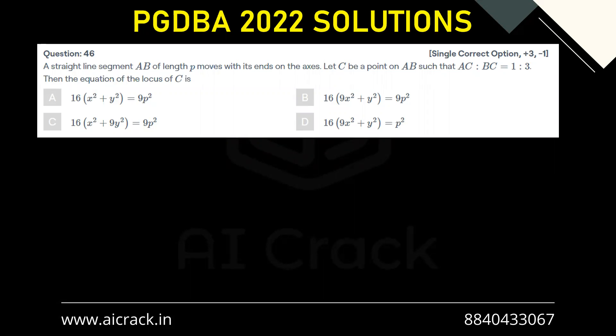Hi everyone, let's solve question number 46. A straight line segment AB of length p moves with its ends on the axis. Let C be a point on AB such that AC is to BC as 1 to 3.